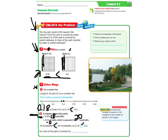So eighteen hundredths is less than twenty hundredths. So more of the park is covered by the paved walkways.